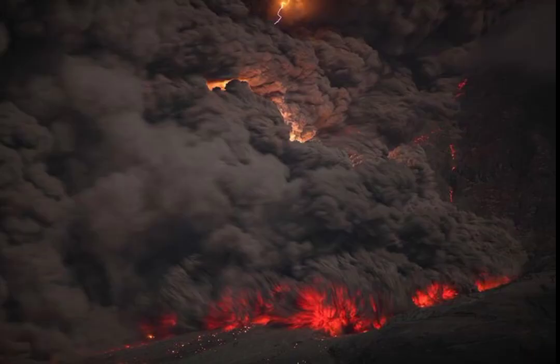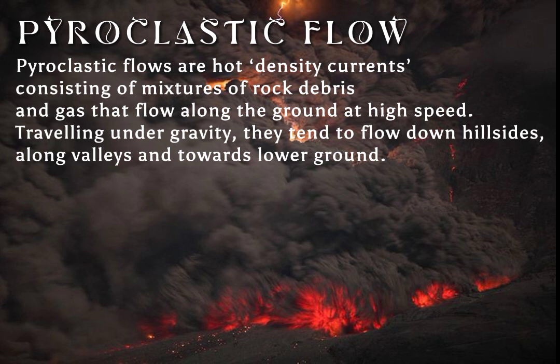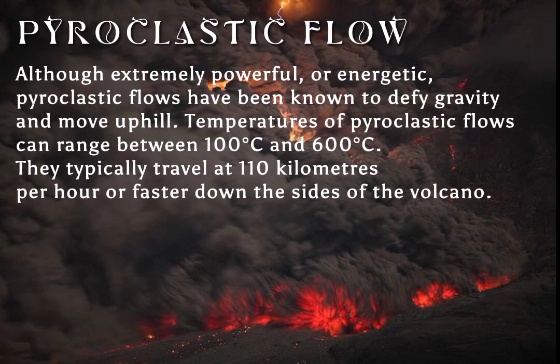Pyroclastic flows are hot density currents consisting of mixtures of rock debris and gas that flow along the ground at high speed. Traveling under gravity, they tend to flow down hillsides, along valleys and towards lower ground. Although extremely powerful or energetic, pyroclastic flows have been known to defy gravity and move uphill. Temperatures can range between 100 and 600 degrees Celsius, and they typically travel at 110 kilometers per hour or faster.